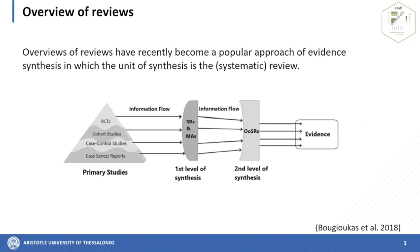The evidence-based medicine pyramid consists of primary studies — observational and experimental — which are sources of information for clinical evidence. Both systematic reviews, the first level of evidence synthesis, and overviews of reviews, the second level, can be considered as lenses through which evidence from primary studies is viewed. Therefore, the unit of synthesis for an overview of reviews is the review study.